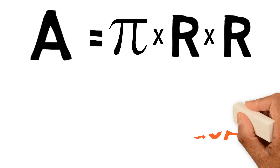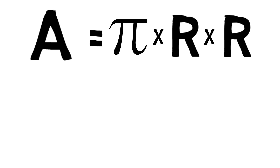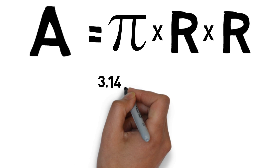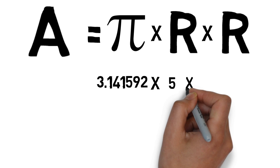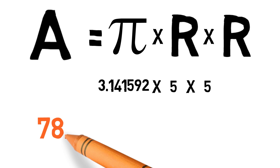Let's look at one more question. A circle has a diameter of 10 cm. What is its area? Don't panic just because our formula does not use the diameter. We know the diameter is twice the radius, so the radius is half the diameter. So a circle having a diameter of 10 cm has a radius of 5 cm. Now let's plug these values into our formula, and here is our answer.